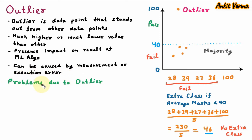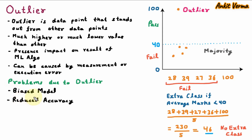Now we are learning the problems that arise due to the outlier. First problem is biased model — because of the presence of outlier, the model is not accurate, it is biased. Second problem is reduced accuracy — the accuracy of model is reduced and it is not giving accurate results. Next problem is increased variance — the data points are scattered at very far distance, so variance is increased.